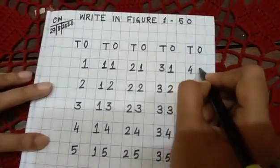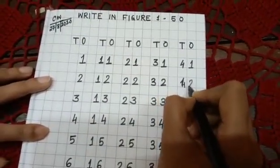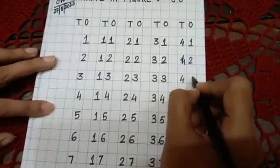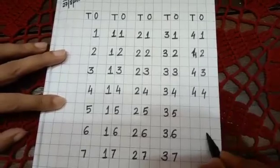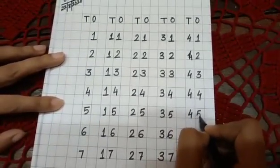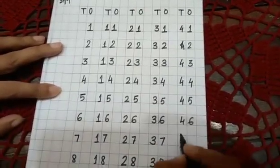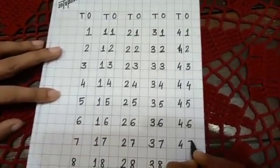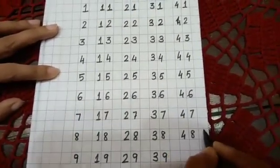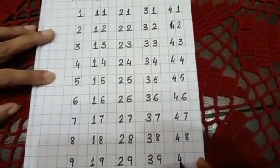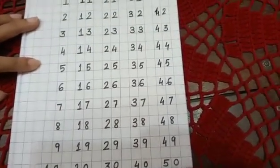Next, 4-1, forty-one, 4-2, forty-two, 4-3, forty-three, 4-4, forty-four, 4-5, forty-five, 4-6, forty-six, 4-7, forty-seven, 4-8, forty-eight, 4-9, forty-nine, 5-0, fifty.